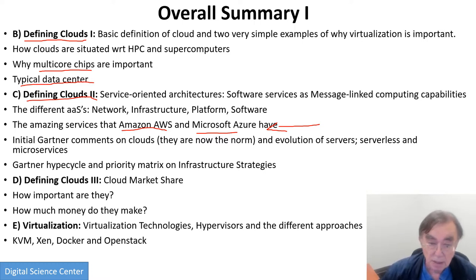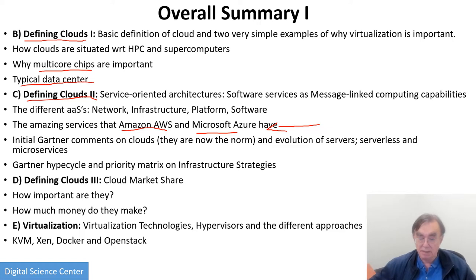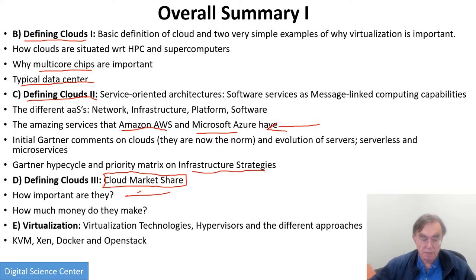Clouds are just the norm now. I still remember lectures given maybe six years ago which were just questioning whether clouds would really make it and how long they would have to get going. Now they've not only got going, they've just overwhelmed everything — 94% of all computing will be clouds in a couple of years' time. Then we look at some of the priority matrices on infrastructure strategies, cloud market share, and how much money is being made. Clouds are a win-win: the people providing clouds make money and the people using clouds make money because they're a cheaper way of doing computing. This tells you how important they are, why CEOs think they're important, and why Amazon is helping its other businesses through AWS.